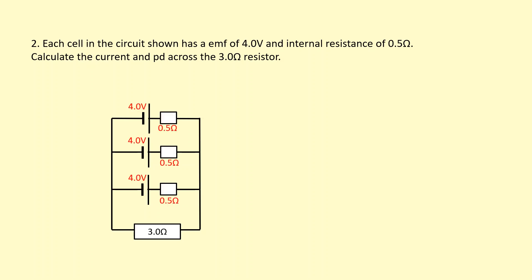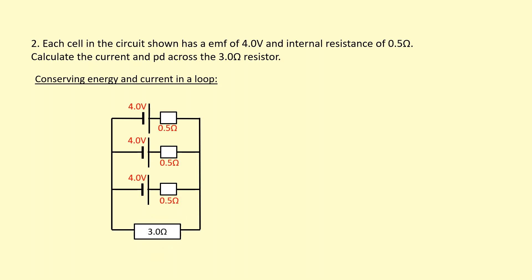Similar question, except now the cells are in parallel. I want to calculate the potential difference and current through the 3-ohm resistor. I'll use energy conservation in a loop. Defining the current through the 3-ohm resistor as I, because the current splits evenly across the cells — which have the same internal resistance — the current through each cell is I over 3.